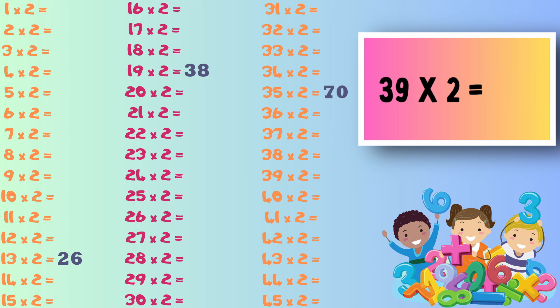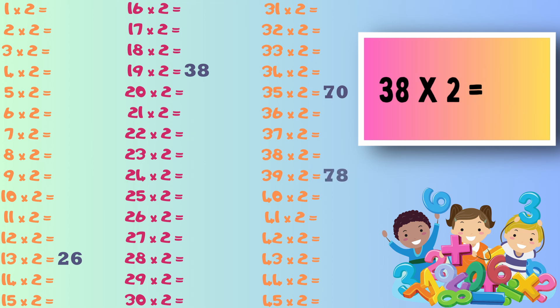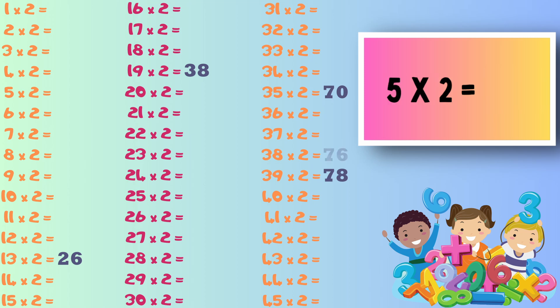Next up it's 39 times 2, which equals 78. Next up it's 38 times 2, and the answer is 76. Next up it's 5 times 2, and the answer is 10.